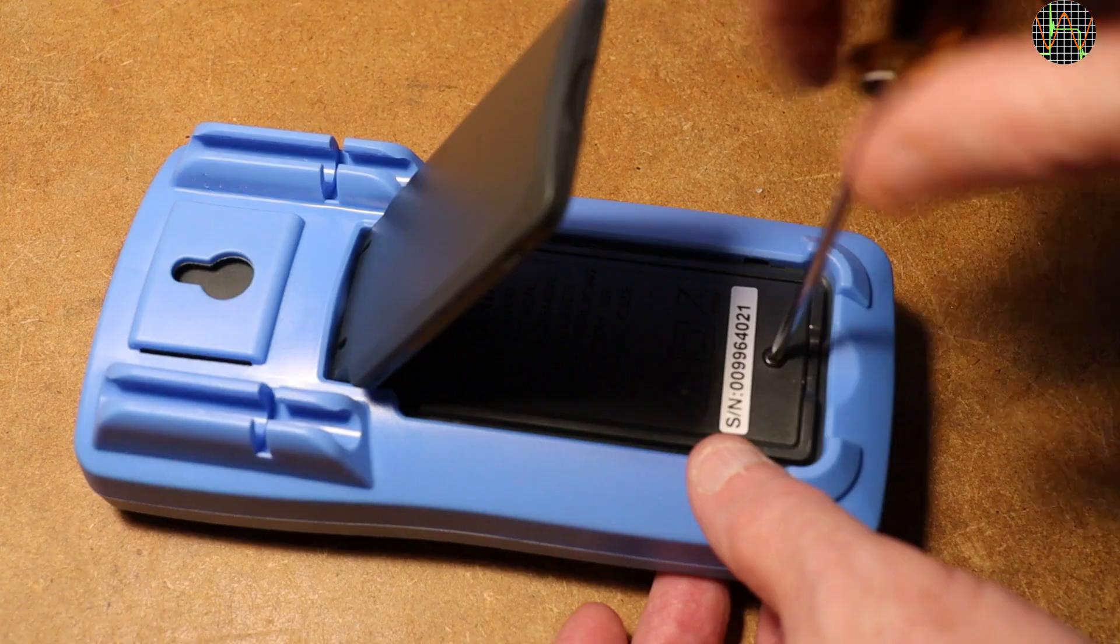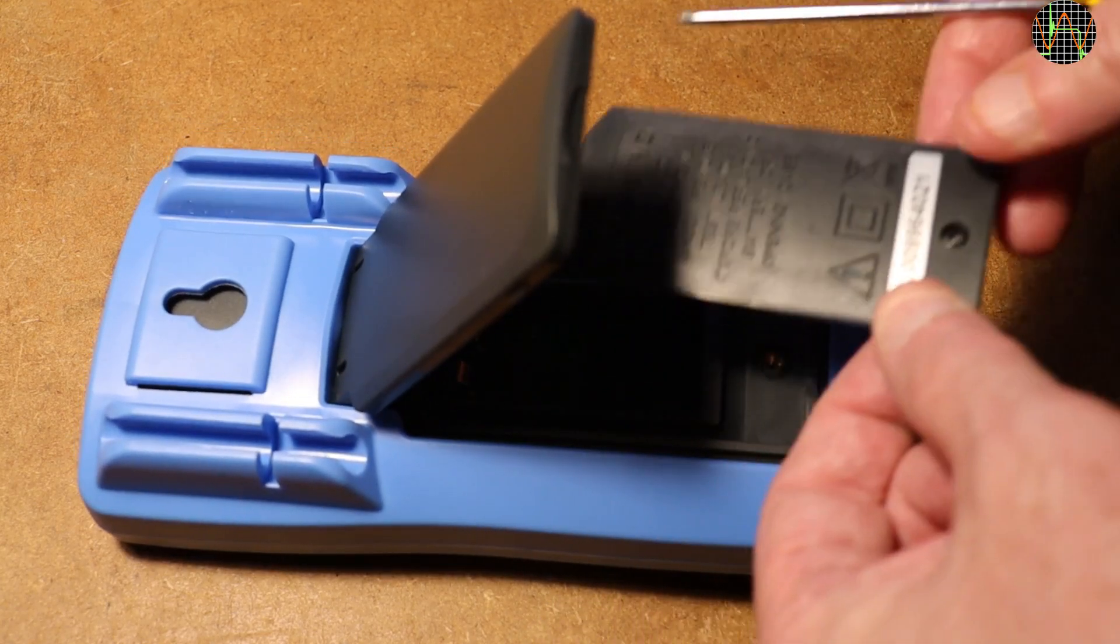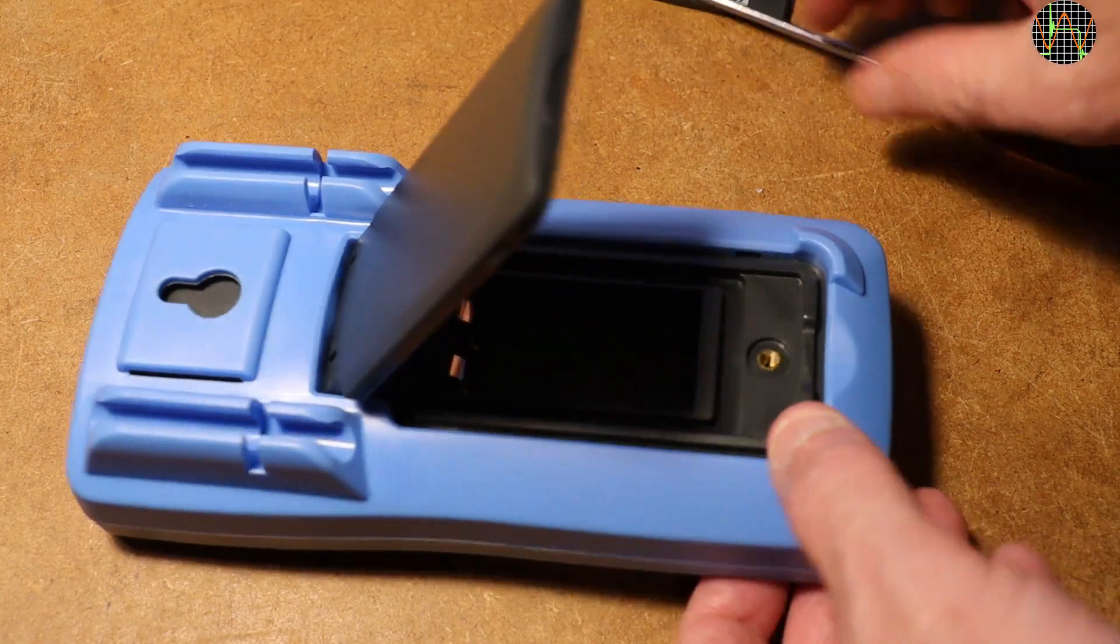The battery compartment is accessible by removing one screw into a metal threaded insert. The meter takes a 9V battery.